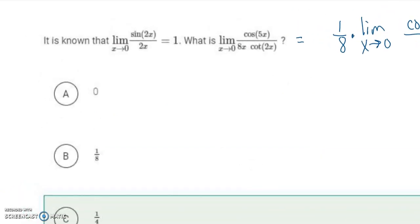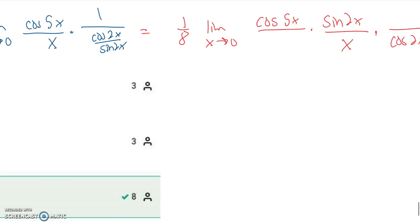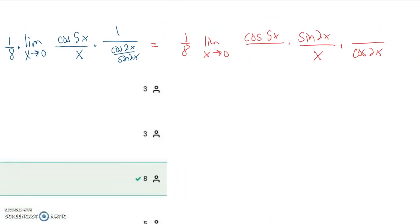In this next example we're using the squeeze theorem. The question is: what is the limit as x approaches 0 of this expression? Plugging 0 in gives an indeterminate value, so we do some algebra. The 8 in the denominator becomes 1/8 out front. Cosine of 5x stays, the x stays underneath. Cotangent becomes cosine(2x) over sine(2x). Moving further, I don't need x under 5x since cosine(5·0)=1. To get sine(2x) out of the denominator, we multiply by sine(2x), kicking it to the numerator, while cosine(2x) stays in the denominator.